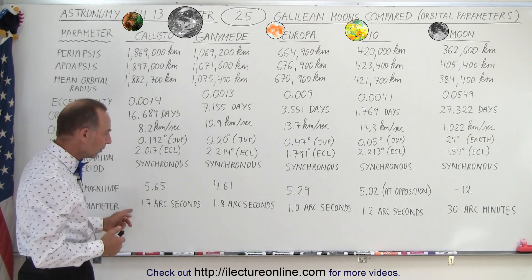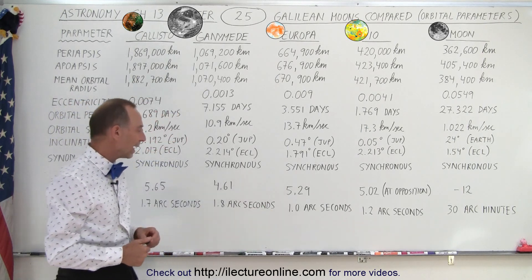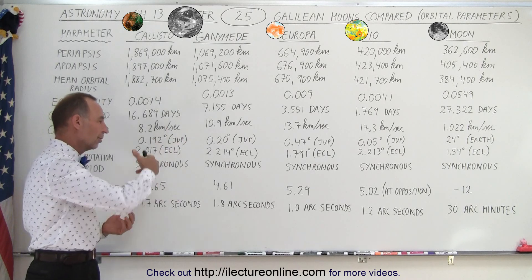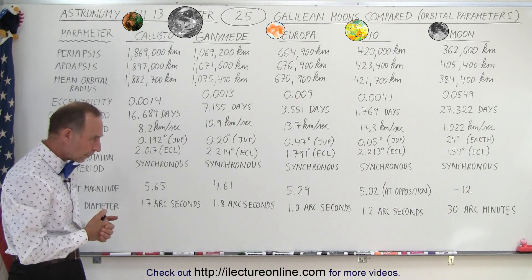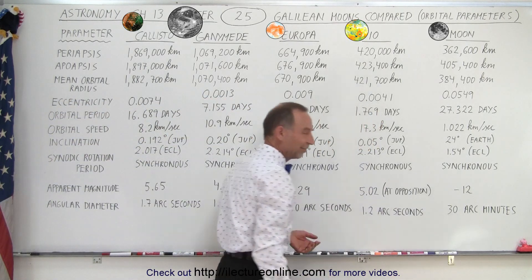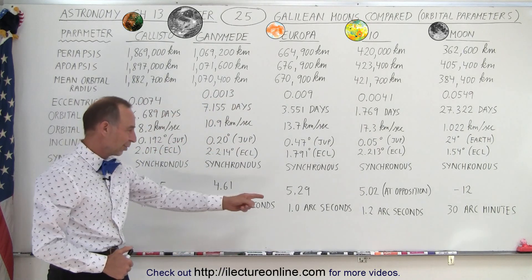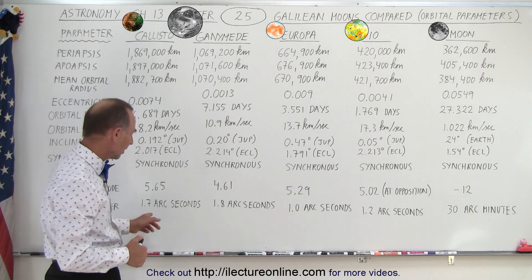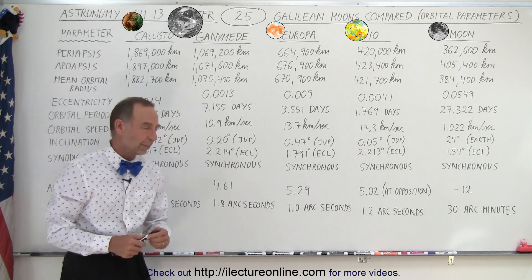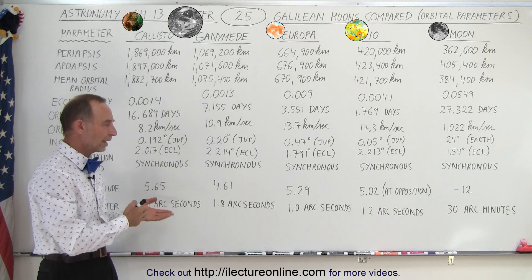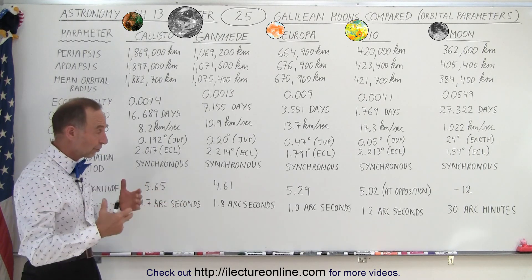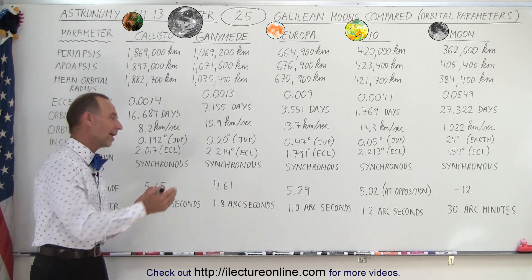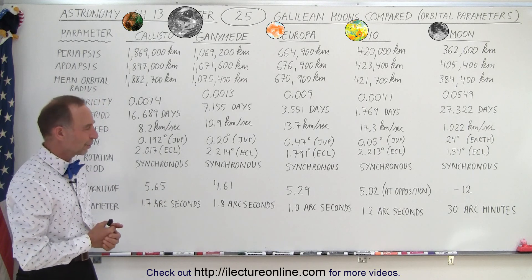The angular diameters of the four moons at opposition range from about 1.0 arc seconds for Europa to about 1.8 arc seconds for Ganymede. Those numbers are smaller when Jupiter is on the far side of the Sun and much farther from Earth. Compared to our moon at 30 arc minutes, these are very small, but any good telescope should be able to see them. Anything over one arc second means atmospheric turbulence should not be a serious problem. The best observations have of course been made when we actually sent spacecraft to those moons to take close-up pictures and measurements with onboard instruments.